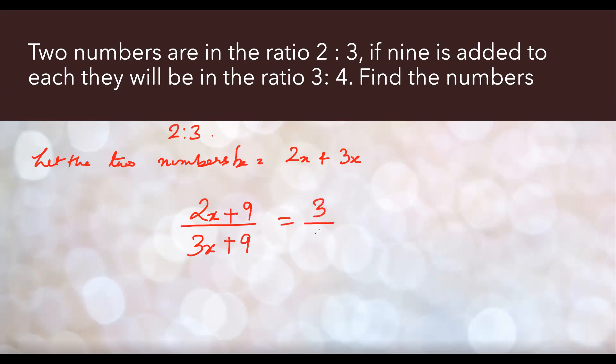Then he says this ratio becomes 3 is to 4, which means 3 by 4. Now simply here we have to use the concept of cross multiplication and we are going to cross multiply this. This will give us 4 times 2x plus 9 which will be equal to 3 times 3x plus 9. I hope everyone is clear with this.